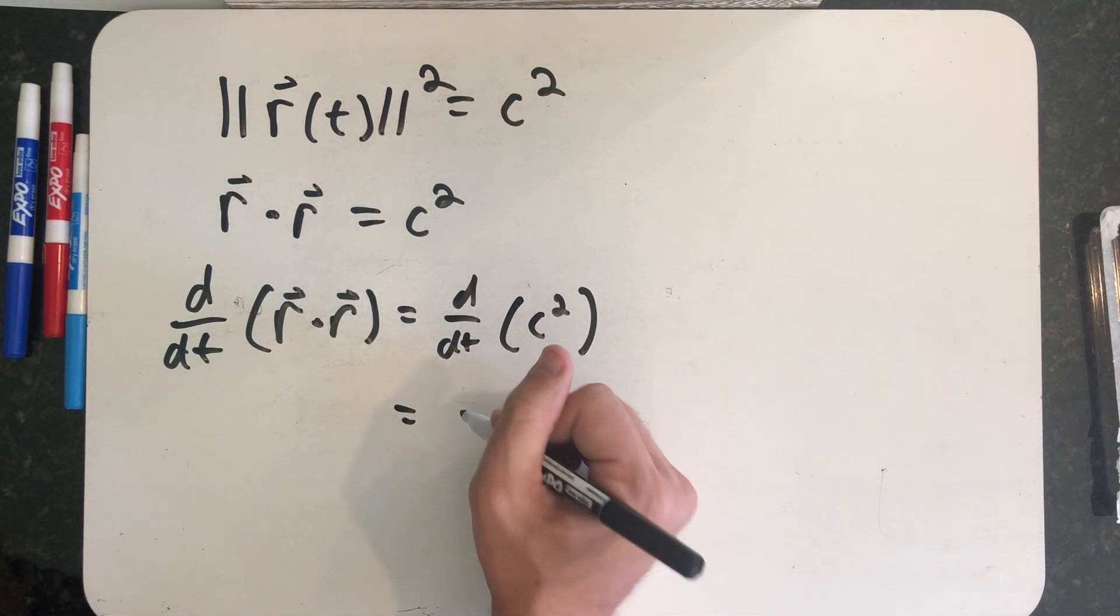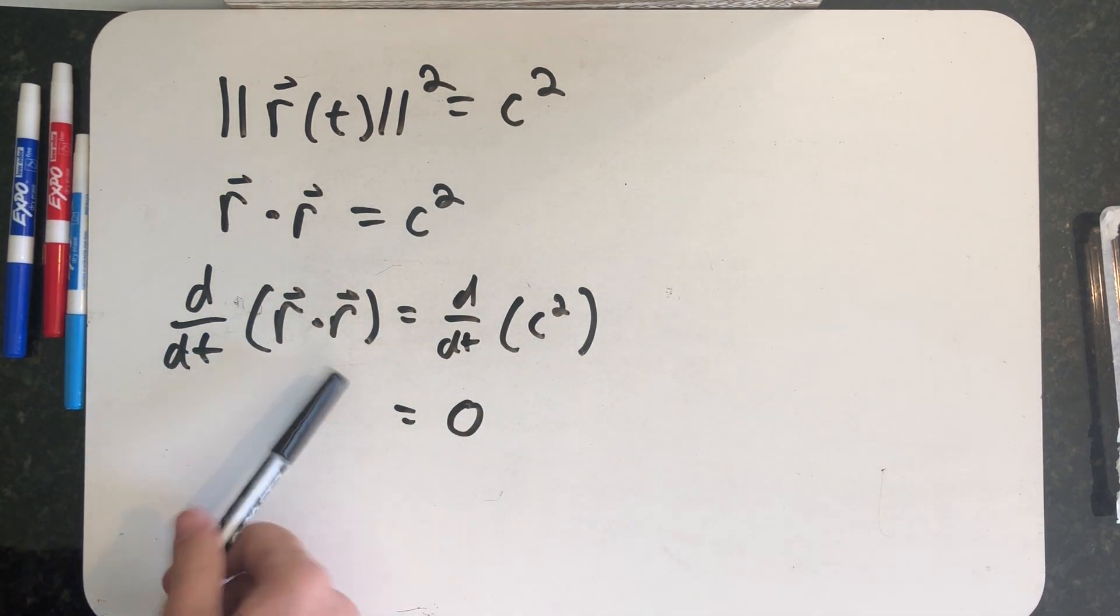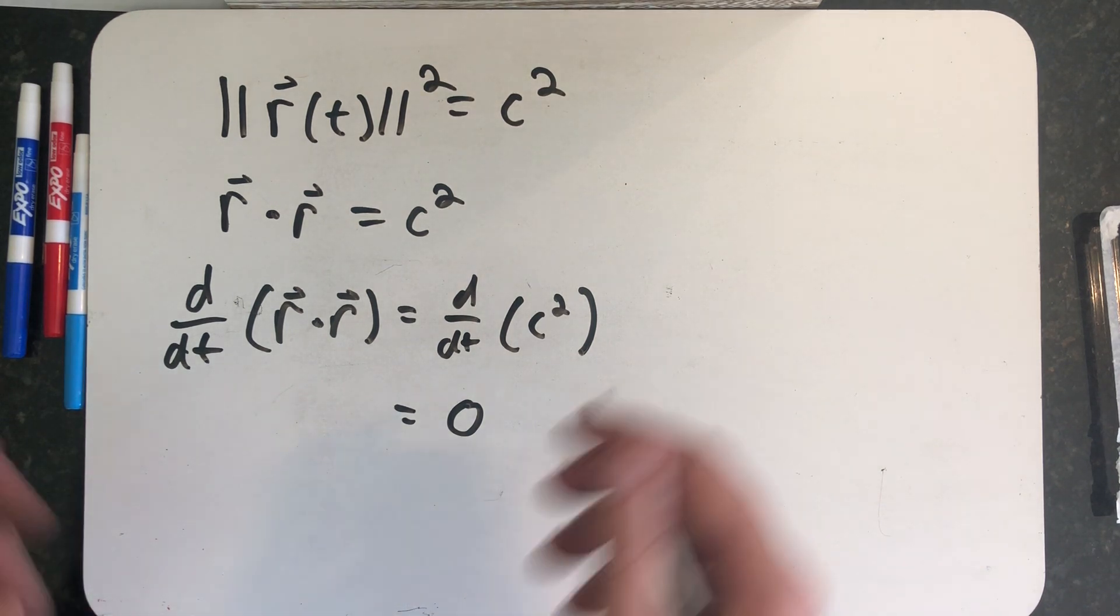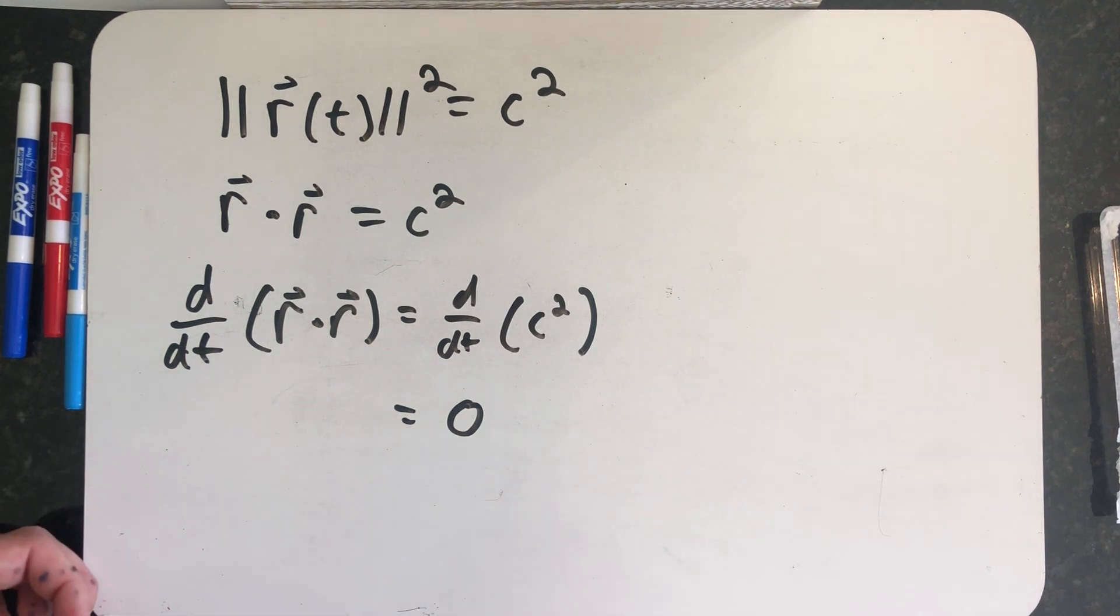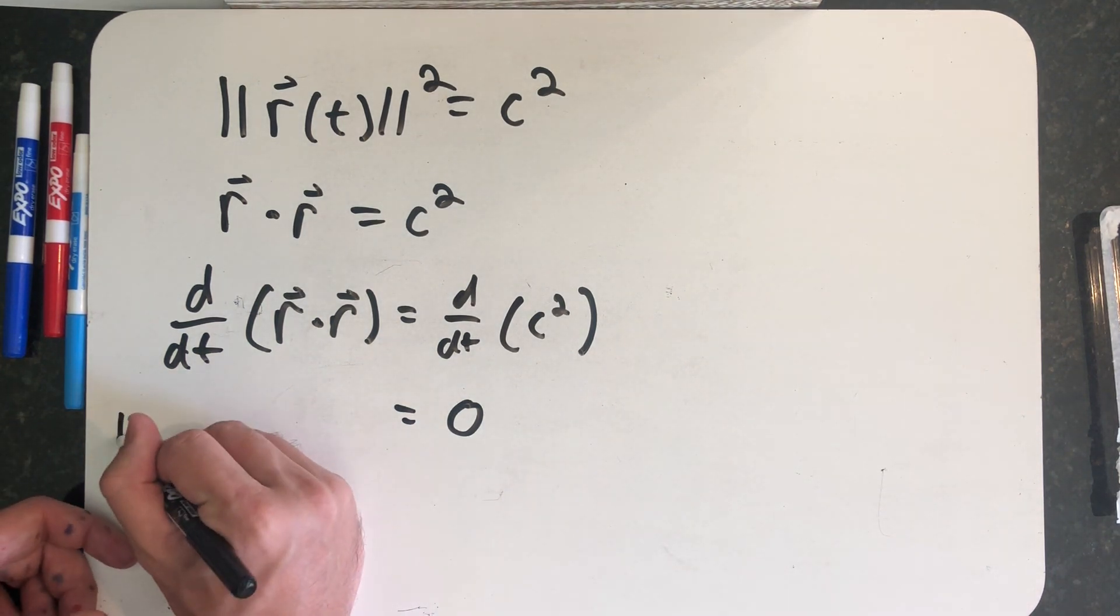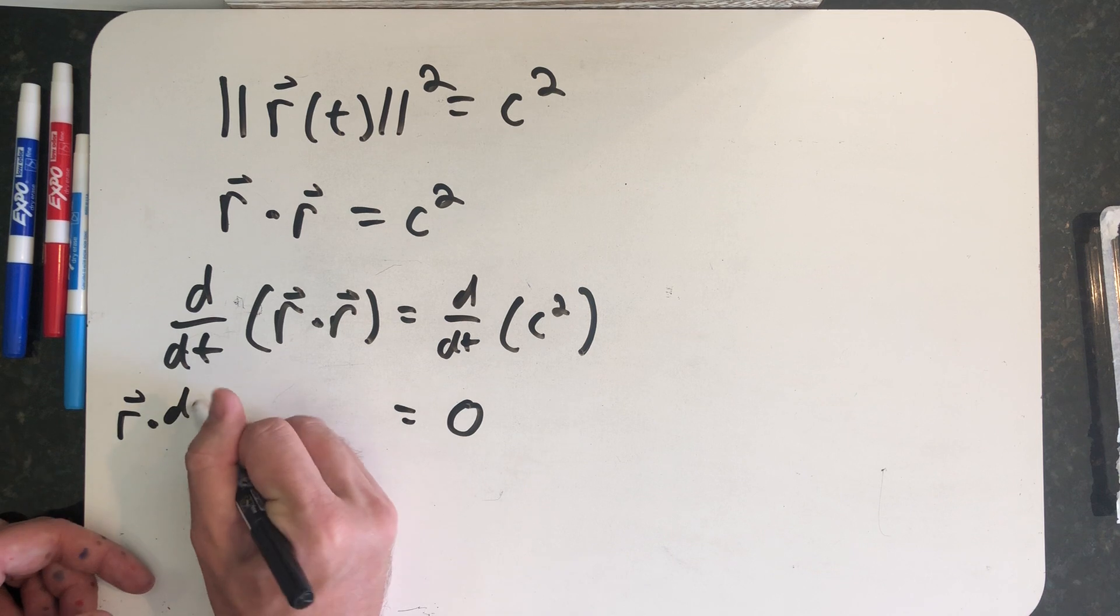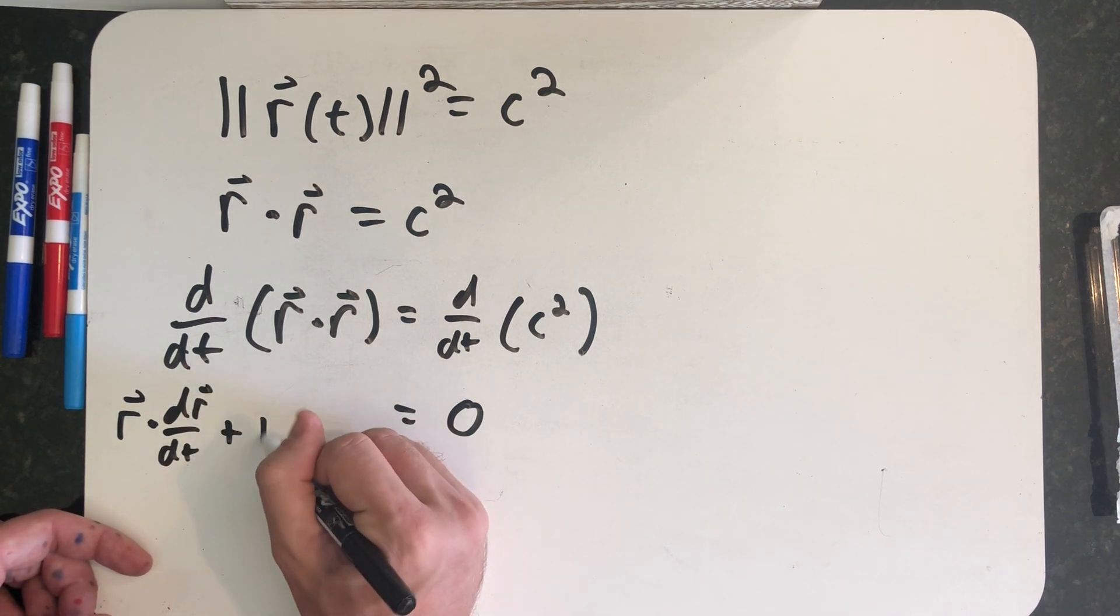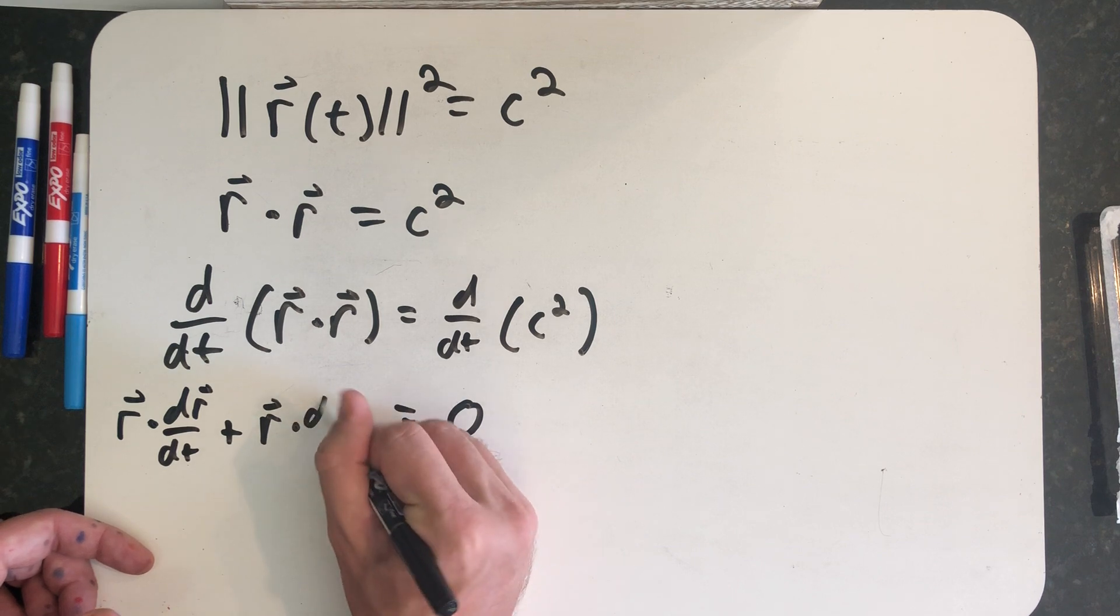The derivative of the constant C squared is zero. The derivative of R dot R. There's a rule for taking the derivative of a dot product. And I'm hoping that you've reviewed that in your textbook. The dot product rule says this, that this would be R dot the derivative of the second vector plus the second vector dot the derivative of the first.